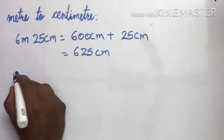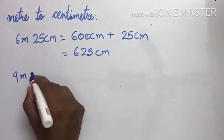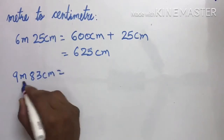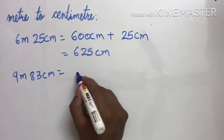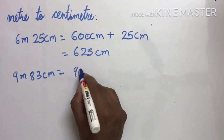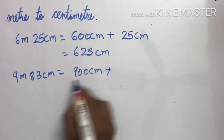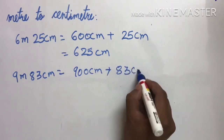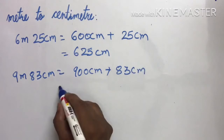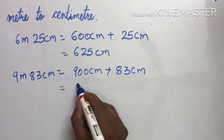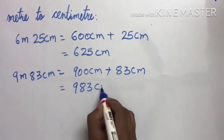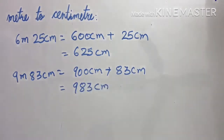One more — 9 meter 83 cm. तो 9 meter कितने cm होता है? 900 cm. Plus ये तो cm में ही है तो 83 cm. प्लस करेंगे तो 983 cm. Understood?